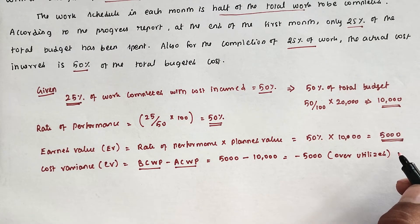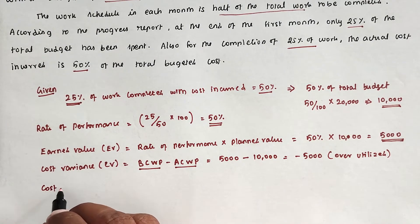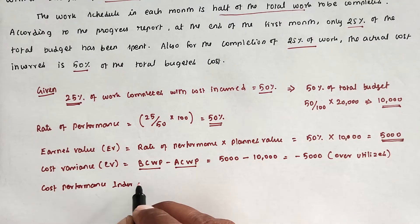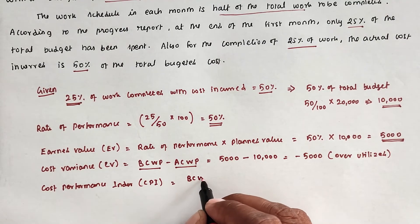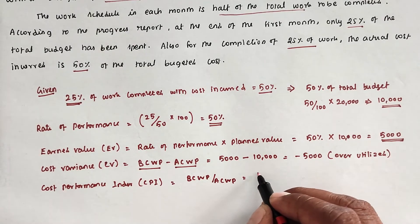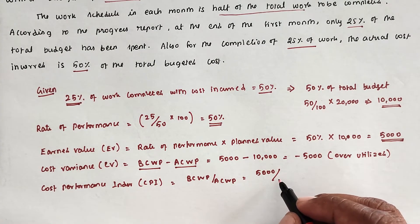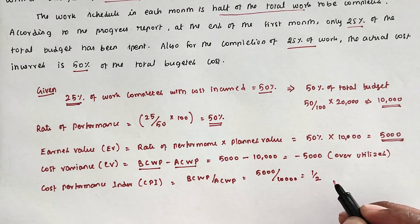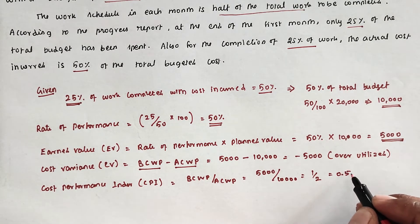Next we find the Cost Performance Index (CPI). CPI = BCWP divided by ACWP = 5,000 divided by 10,000 = 1/2. So CPI equals 0.5.